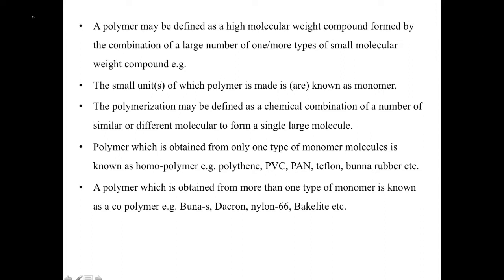A polymer may be defined as a high molecular weight compound formed by the combination of a large number of one or more types of small molecular weight compounds — for example, polyethylene. The small unit of a polymer is known as the monomer. Polymerization can be defined as a chemical combination of a number of similar or different molecules to form a single large molecule. A polymer obtained from only one type of monomer is known as a homopolymer; if it has more than one type of monomer it is called a co-polymer.